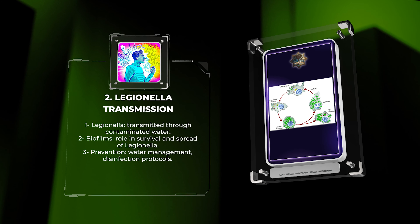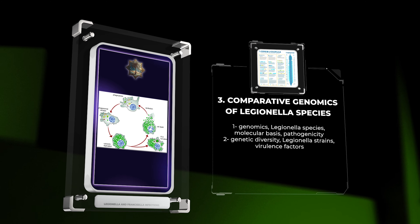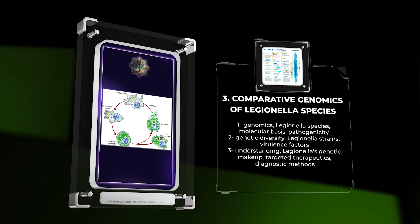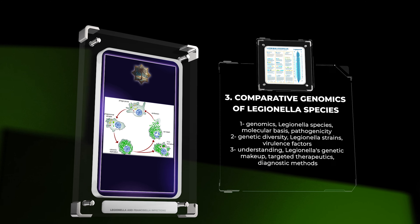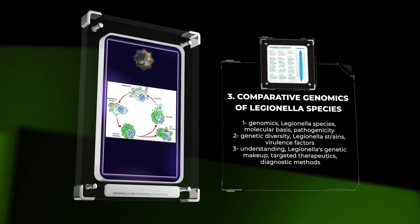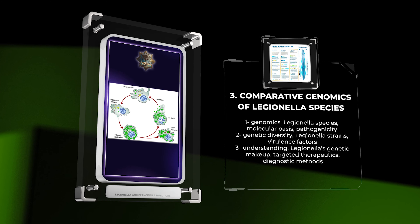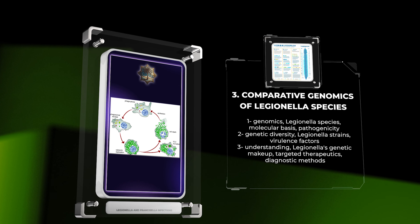Legionella pneumophila is a bacterium causing Legionnaire's disease. Its intracellular life cycle involves invading host cells, forming vacuoles, and manipulating host processes using effector proteins.